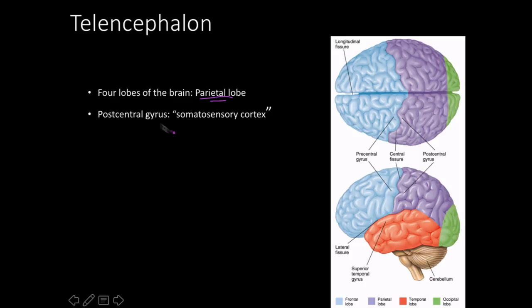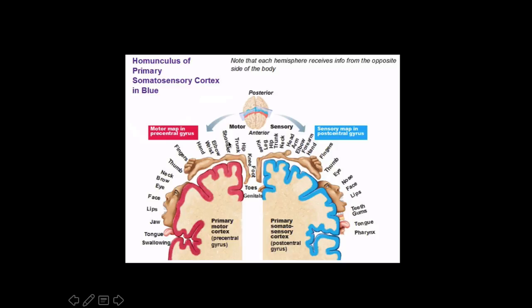The parietal lobe's postcentral gyrus is the somatosensory cortex. A diagram shows the precentral gyrus in pink (motor) and the postcentral gyrus in blue (sensory). The size of each body region in the diagram reflects the degree of specialization — the hands are far more developed in both sensory and motor precision compared to areas like the shoulder or knee.